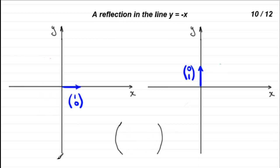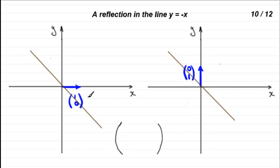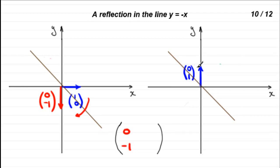In number 10, we've got a reflection in the line y equals minus x. That's a diagonal line going like that. The unit base vector (1, 0) is flipped over this line to the position (0, −1). Then (0, 1) is flipped over the line to the position (−1, 0). The matrix has columns (0, −1) and (−1, 0).